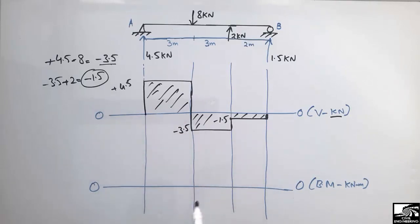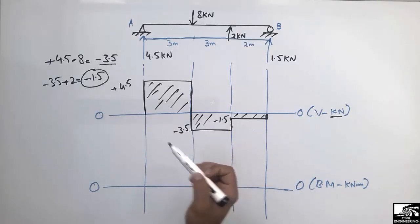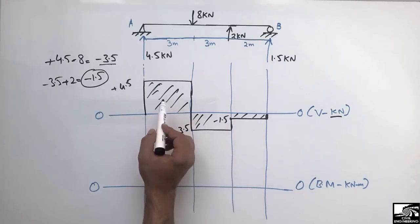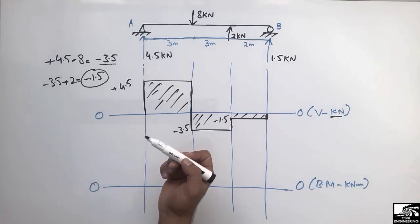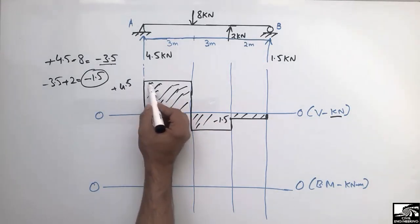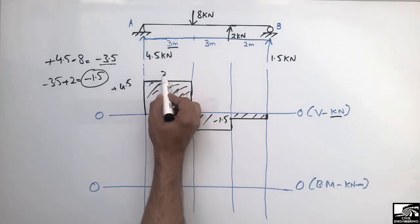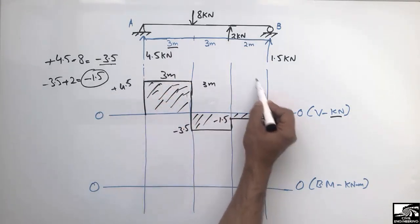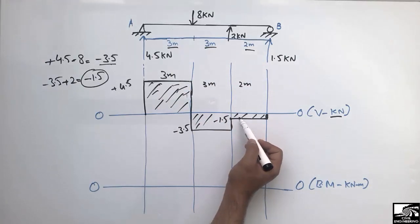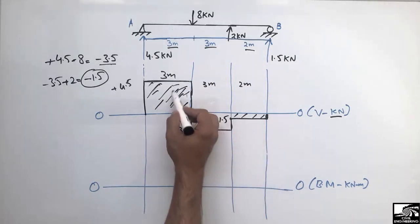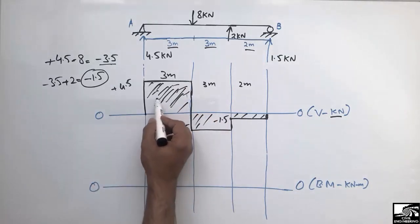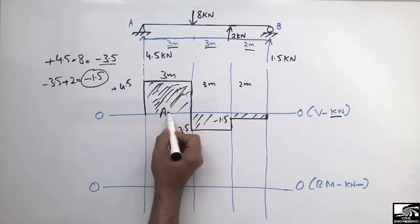Now we draw the bending moment diagram. The bending moment diagram depends on the shear force diagram — specifically, the area of each rectangular block in the SFD gives the bending moment values. We can see three rectangular blocks: block A1 has a height of 4.5 and a length of 3 meters; block A2 has a length of 3 meters; and block A3 has a length of 2 meters. The largest area is in block A1, so the maximum bending moment will be there.